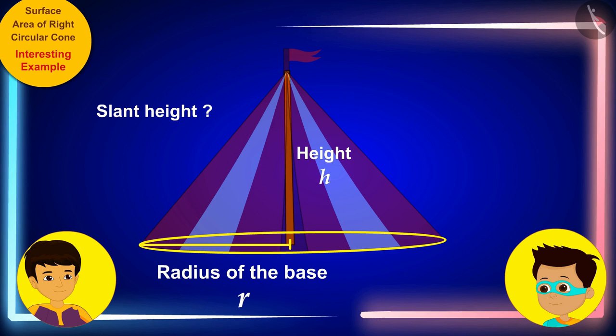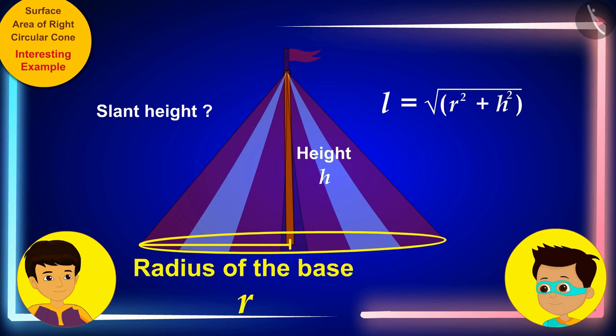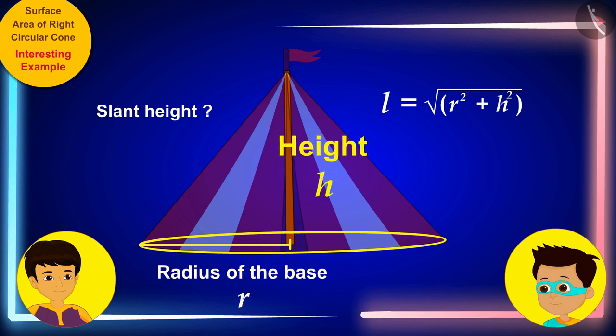Don't worry, that is also very easy. Don't you remember that we can find the slant height of the cone by writing the measurements of the radius of its base r and the vertical height h of the tent in this formula?